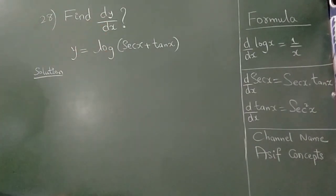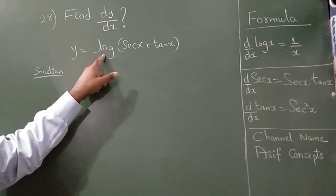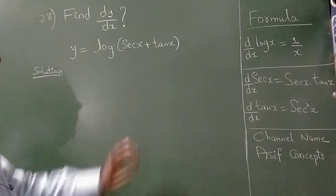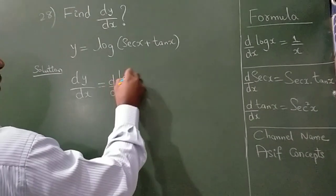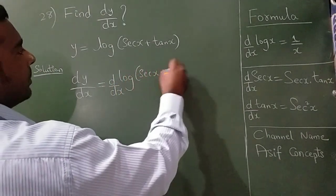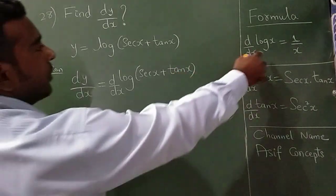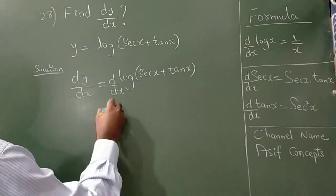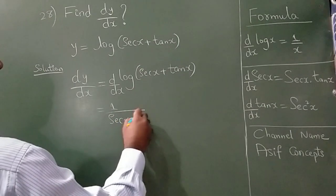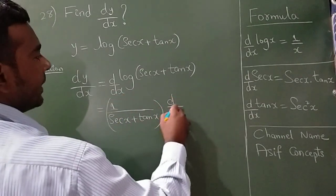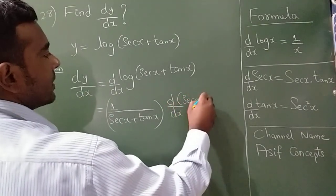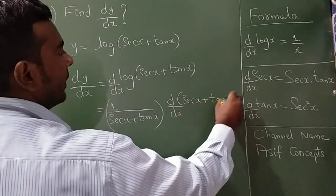Find dy/dx if y is equal to log of (sec x + tan x). So, dy/dx of log(sec x + tan x). From this formula, I can write this as 1 divided by (sec x + tan x). By chain rule, I can write this as dy/dx of (sec x + tan x).